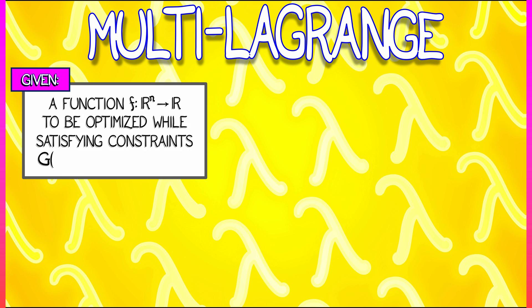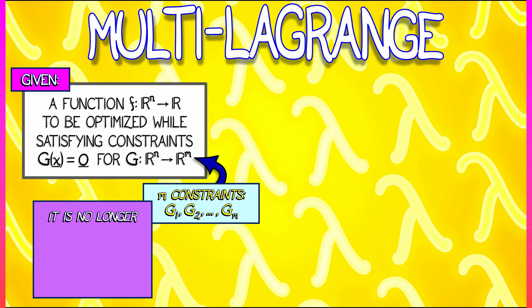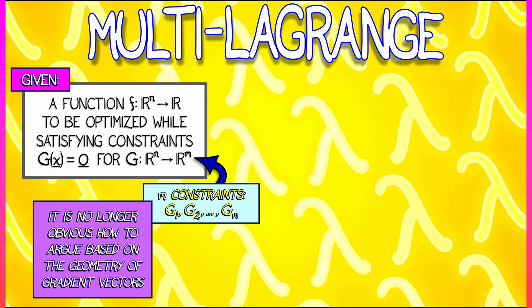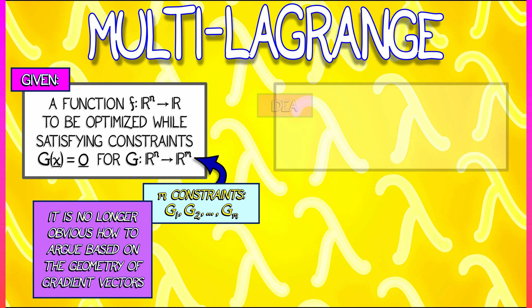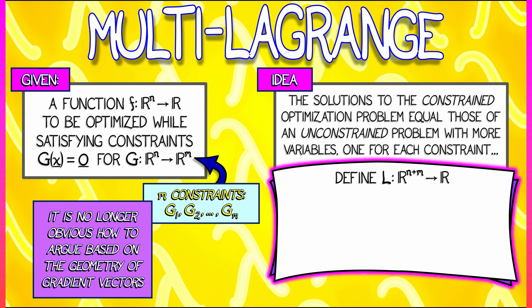Let's say we have a function f with n inputs and one output, and we need to optimize it while satisfying multiple constraints, that g of x equals zero. For g, a function with n inputs and m outputs, that means we have m constraints: g1, g2, all the way up through gm, and they all have to be zero. It's no longer obvious how to argue based on tangency or perpendicularity, so we'll use the idea that solutions to the constrained optimization problem are those of an unconstrained problem with more variables — one for each constraint.